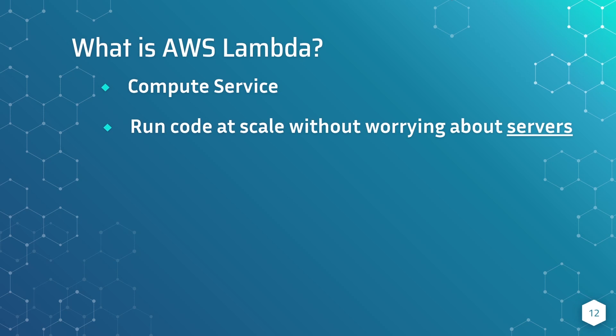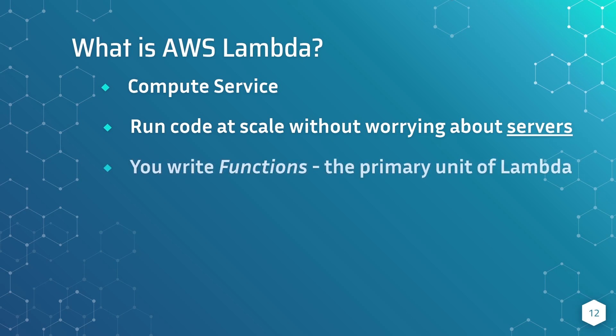If you've hosted an application before — maybe a web application or backend APIs — you had to think about the servers to deploy on, maintaining them, security, logging, all the details that go into maintaining software applications. With Lambda, we still get the ability to run our code, host our APIs, do event processing, et cetera. However, we never actually have to deploy our code onto servers. Instead, you write functions. Functions are the primary unit of Lambda — just a block of code.